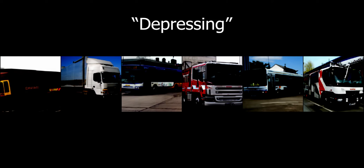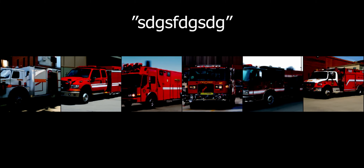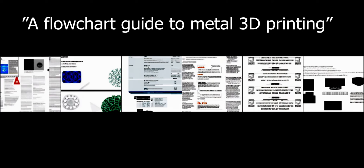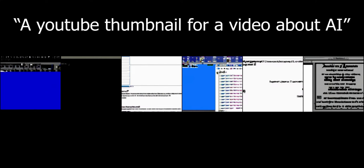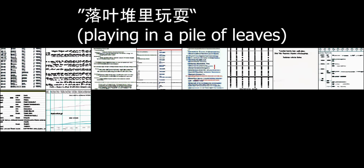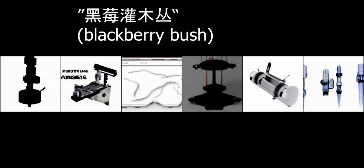It produced trucks more than once. It also does interesting things to gibberish where it might produce trucks. A few things caused it to just make random nonsense figures — like if you asked it to make a flow chart or a YouTube thumbnail, or if you try to speak Chinese at it, it doesn't speak Chinese.